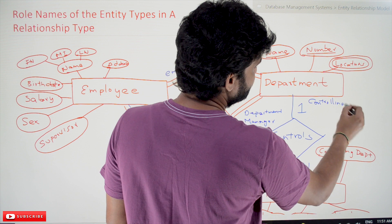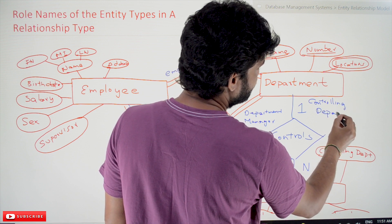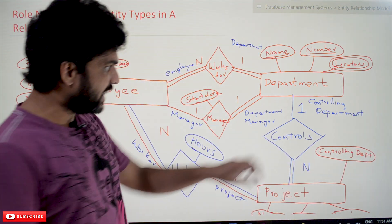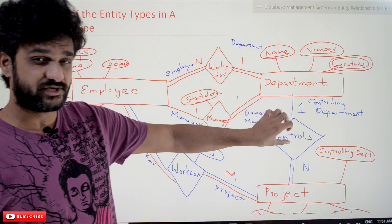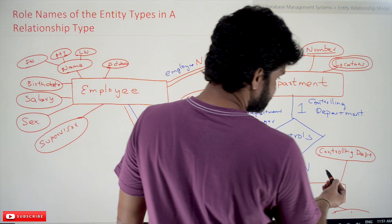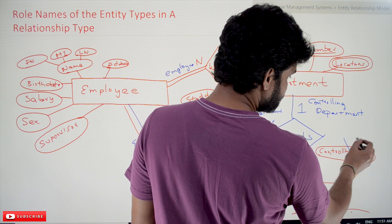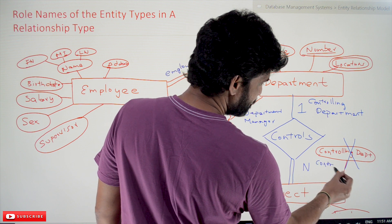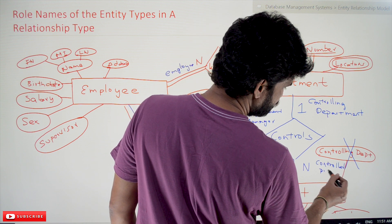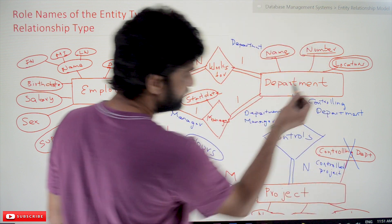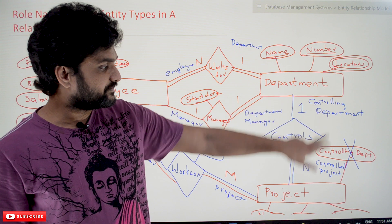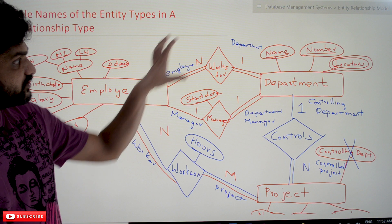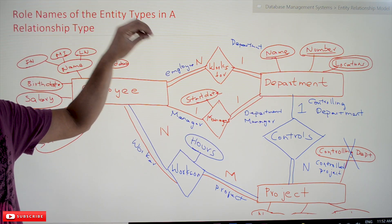The name should be very apt with respect to the relationship type. In this case, 'controlling department' and 'controlled project' — the projects are controlled by the department. So based on that, the role names are 'controlling department' and 'controlled project'. These are what we call role names of entity types with respect to relationship types.